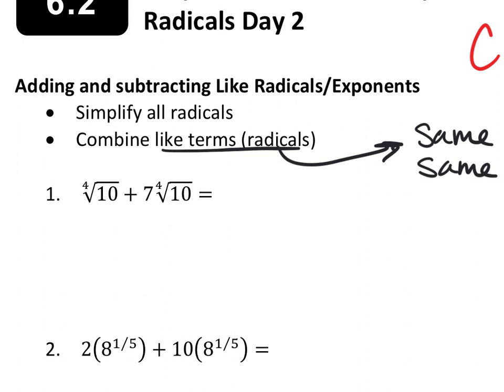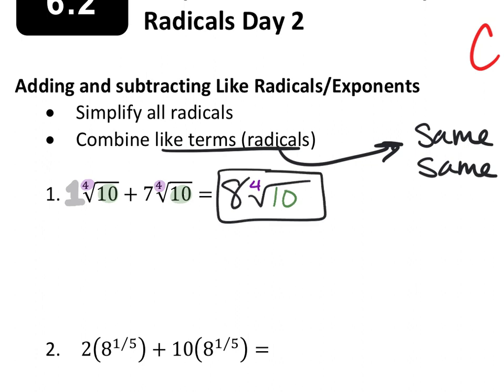In this first problem, do you see that both terms have the same index — the same little number — and they have the same radicand, the same number underneath the root? That means we can just add together the coefficients, the same way we added coefficients of regular variables. There's an invisible one coefficient in front of that first term, and if we're adding it to seven of the same things, we just have eight fourth roots of ten. Seven plus one — the numbers in front — we add them together. Do not change the radicand or the index.